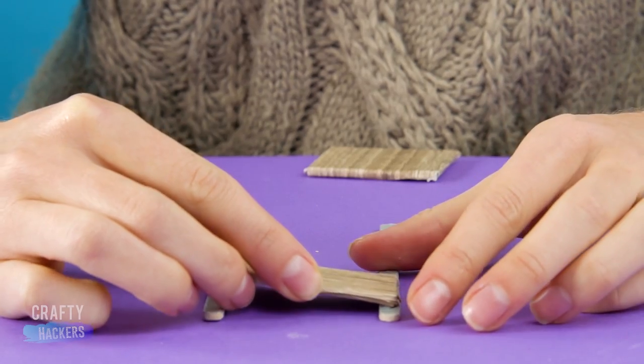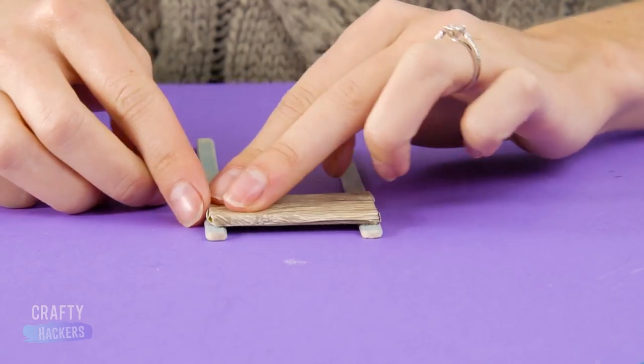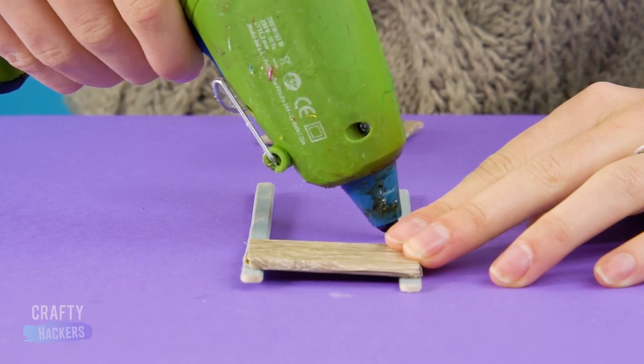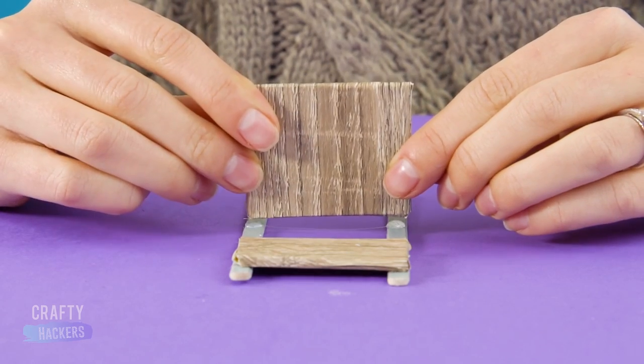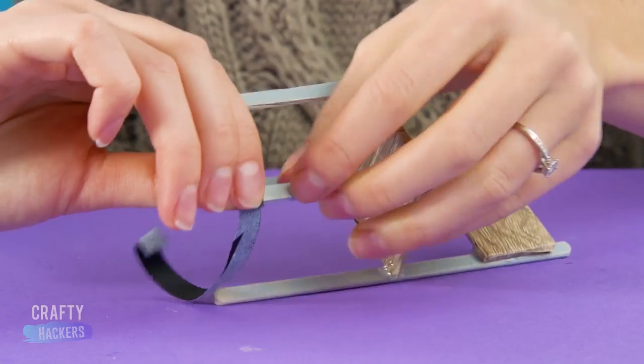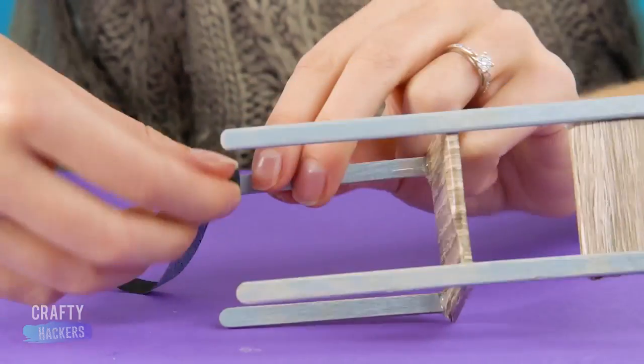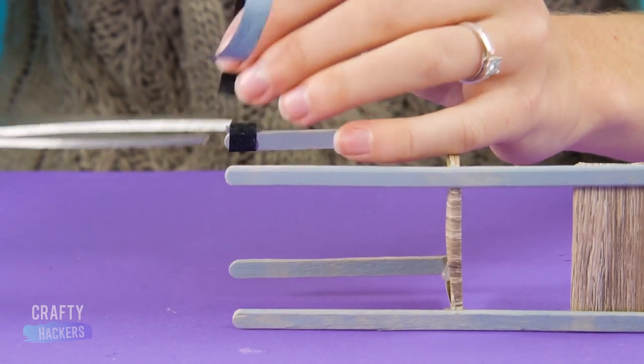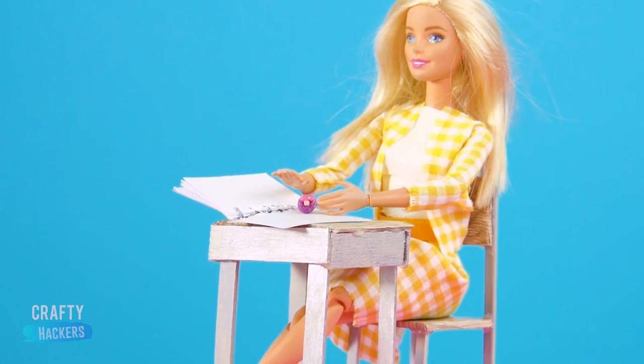Next, make the chair with the other pieces of foam board and a couple more painted popsicle sticks. Wrap some black tape around the bottoms of the legs to make it look more authentic. Now Barbie is ready to slay some numbers in her calculus class.